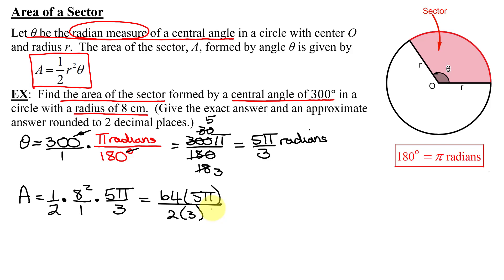Does anything simplify here? Yes. 2 goes into 2 one time. 2 divides into 64 32 times. Does anything else reduce? No. So I'm going to get 32 times 5 is 160 pi divided by 1 times 3 is 3.